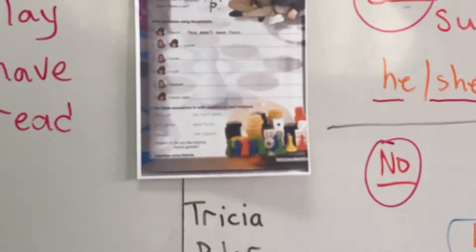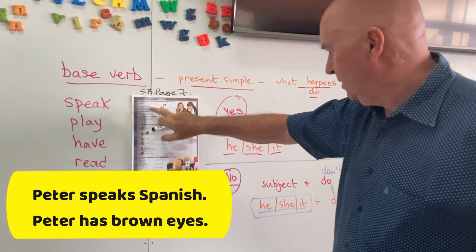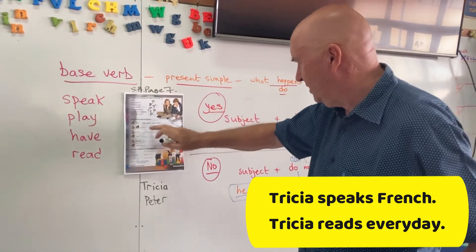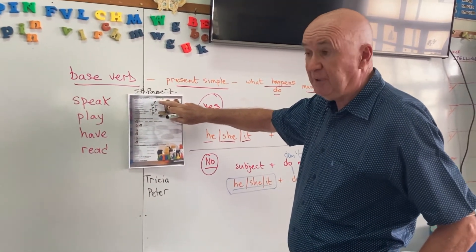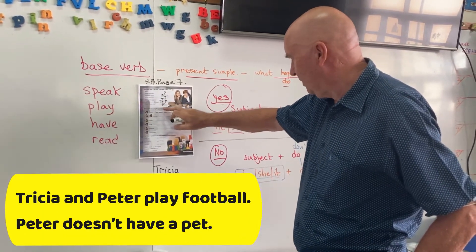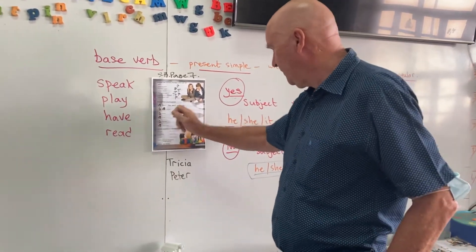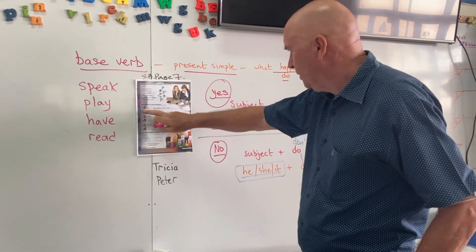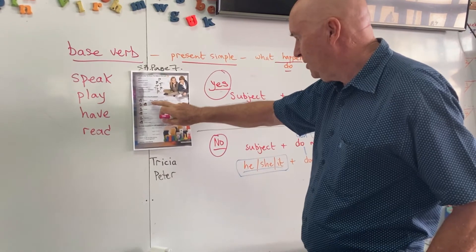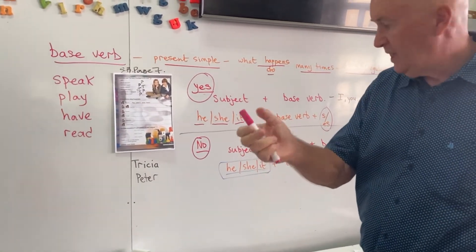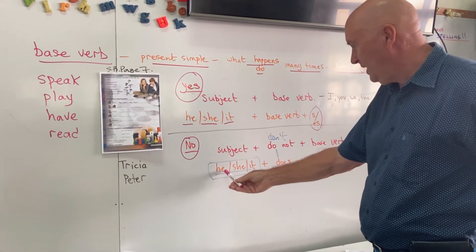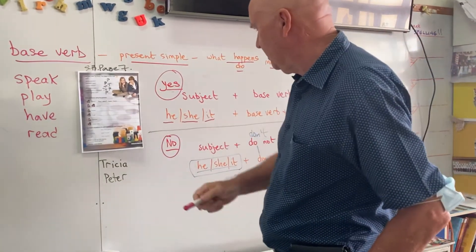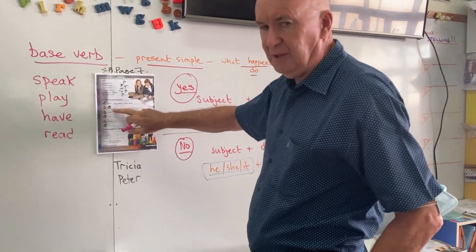From the CD we can say: Peter speaks Spanish, Peter has brown eyes, Trisha speaks French, Trisha reads every day. For the two of them — Trisha and Peter play football. And Peter doesn't have a pet. Now for the first exercise: Does Peter speak French? Peter is a boy — he — and we're saying no, so it's: Peter does not speak French.